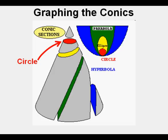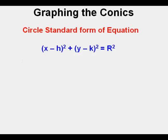The circle is formed by making a horizontal slice in an upright cone, as shown here by the red circle. The standard form of the equation of a circle is x minus h quantity squared plus y minus k quantity squared equals the radius squared, or r squared.